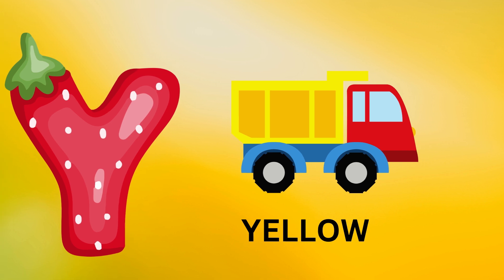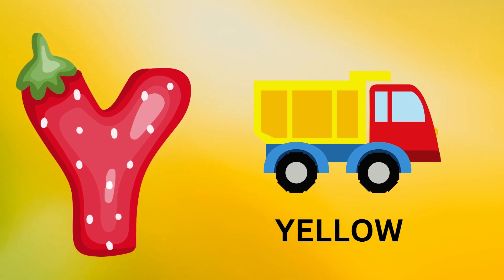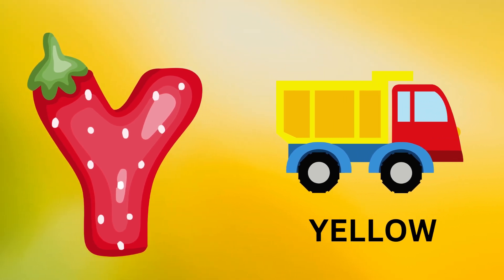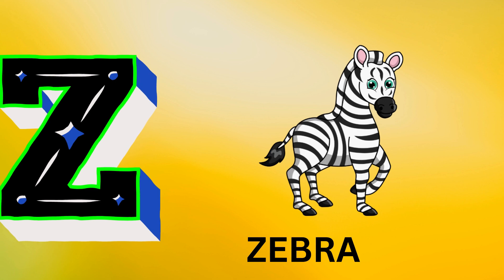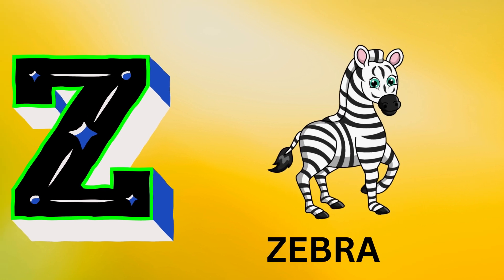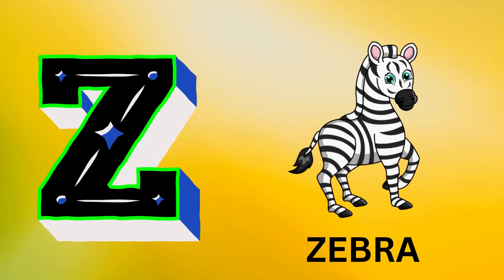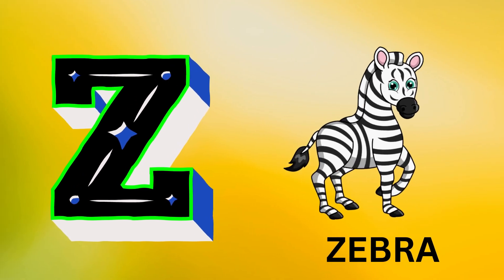Y is for yellow, ye-ye-yellow. Z is for zebra, z-z-zebra.